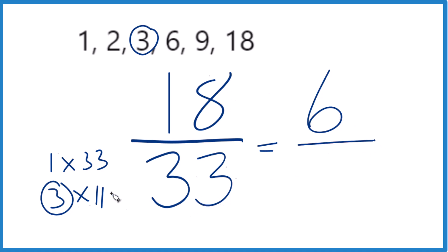Divide 33 by 3, and you get 11. So we end up with 6 over 11.